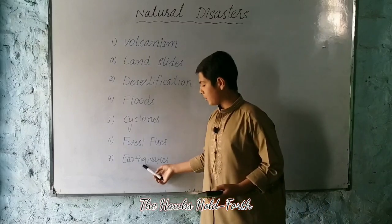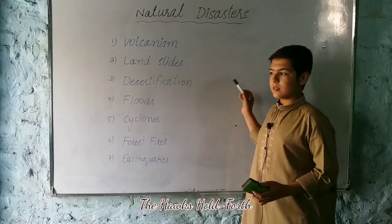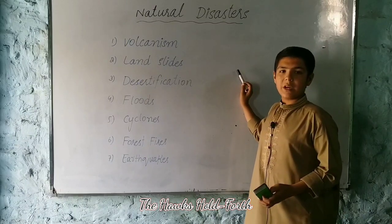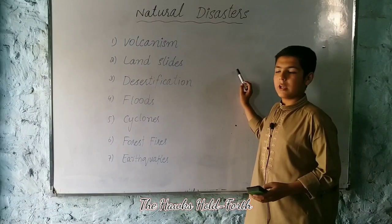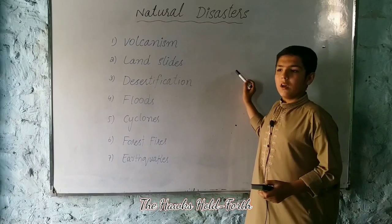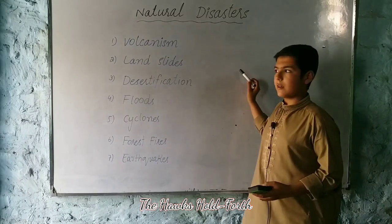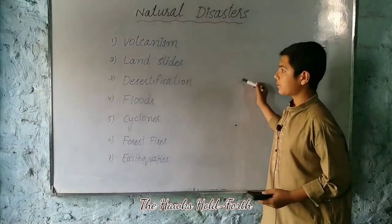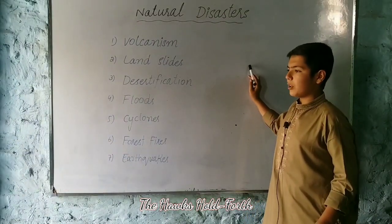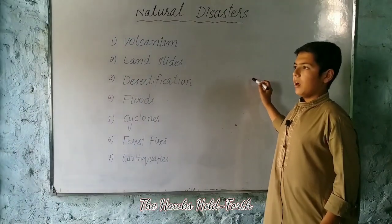Number seven is earthquakes. Earthquakes are the most frequent natural disaster all over the world, and especially in Pakistan earthquakes occur very frequently, destroying a lot of human lives and properties worth billions and millions. Earthquakes are also called a major environmental hazard in the world. Thank you.